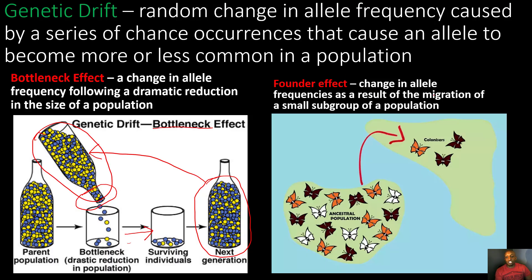The founder effect is a change in allele frequencies resulting from the migration of a small subgroup of a population. For example, a small group of butterflies moves to a new area due to lack of food or resources. They call it the founder effect because this group has literally founded a new place to live. This small group does not represent the whole original group — notably, white butterflies are present in the original group but are absent from the migrating subgroup.